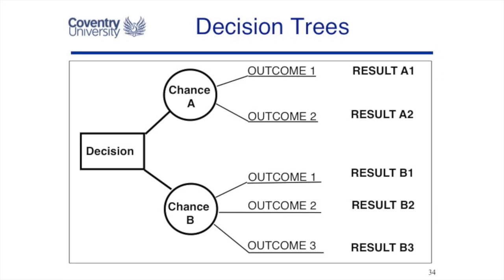A decision tree is where you have two options, A or B. If you do A, it could have certain outcomes; if you do B, it could have other outcomes. If you can accurately work out the percentage of these outcomes, you can compare the value of choosing option A against option B.